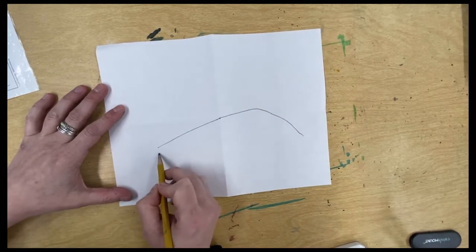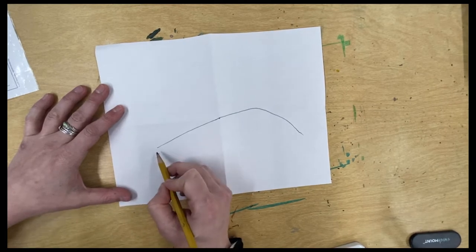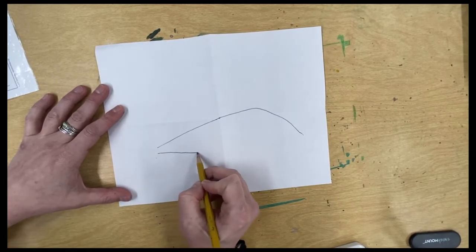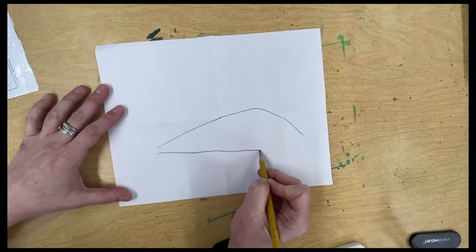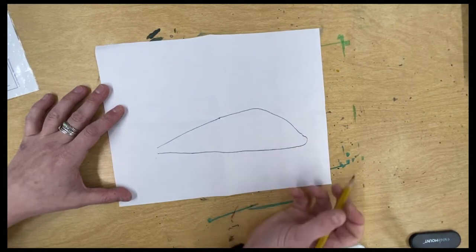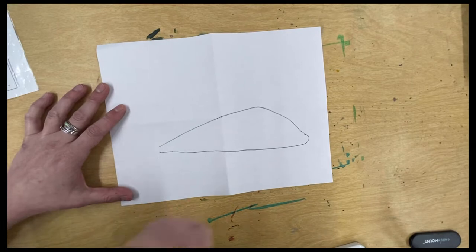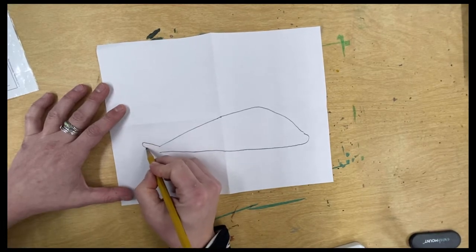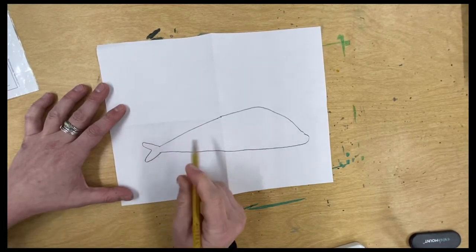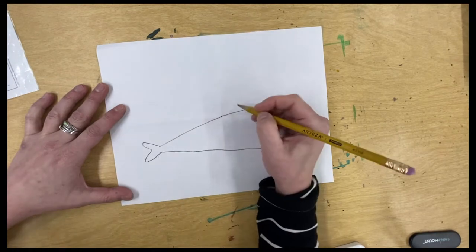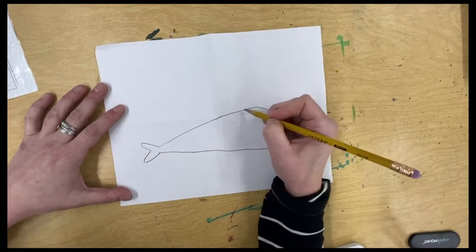And then we're going to come close to the tail here and we're just going to go kind of flat over, a little bit further out and then up. Give him his tail. And then we're going to give him his fin on the back.